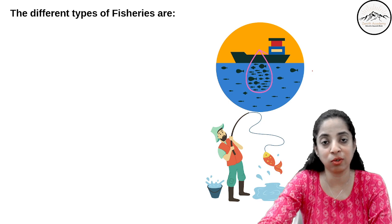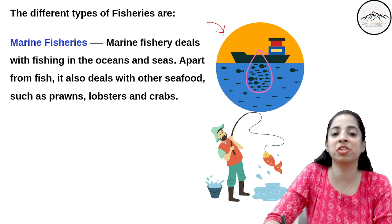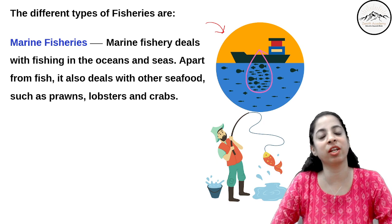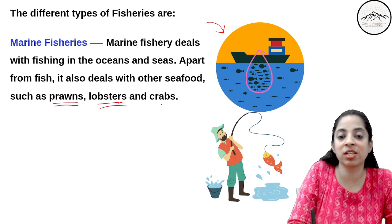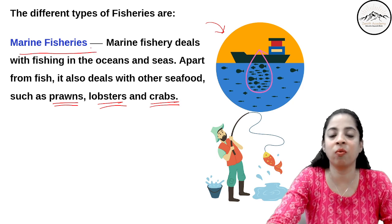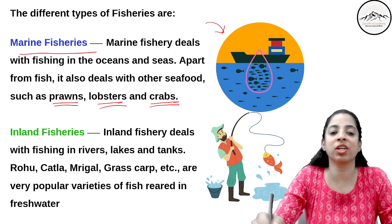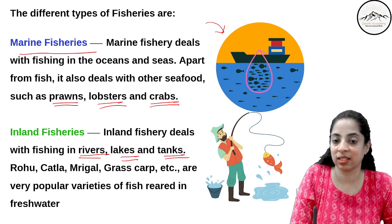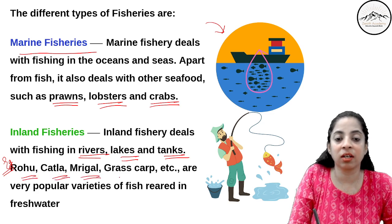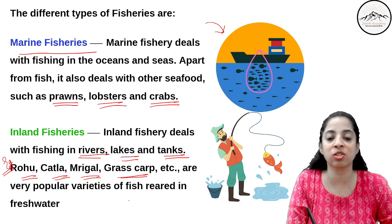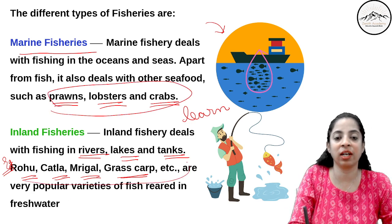There are two types of fisheries. Marine fisheries deal with fishing in oceans and seas; apart from fish, it also deals with seafood such as prawns, lobsters, and crabs. Inland fisheries deal with fishing in rivers, lakes, and tanks. Examples of fresh water fish include Rohu, Katla, Brigal, and Grass Carp — very popular varieties reared in fresh water.